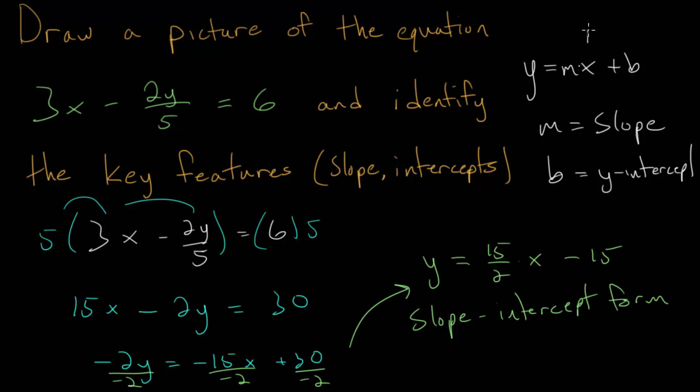Notice that if you plug in x is equal to 0, this part goes away, and then y is just equal to b. And when x equals 0, that's when the line crosses the y-axis. So from this, we can identify the slope. It would be 15 over 2, and the y-intercept would be at negative 15. Or in other words, this has the coordinate when x is equal to 0, y is equal to negative 15.